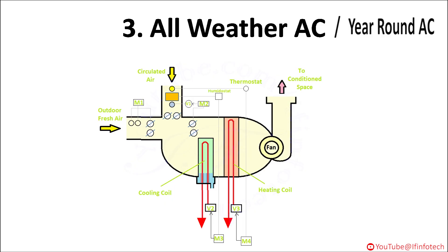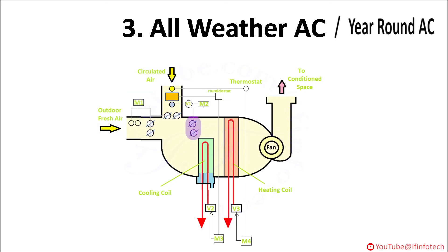In all weather AC, the amount of outdoor fresh air and recirculated air is controlled by motor M1 and M2. The air conditioner is designed such that when outdoor air temperature is either above or below a certain selected value, it is assumed to be summer or winter season. In summer season, the bypass damper is almost closed and most of the air passes through the cooling coil. The cooling coil may be an evaporator coil or a coil through which chilled water is passed. It is provided with valve V1 which can be controlled by motor M3.